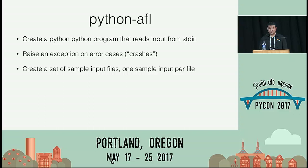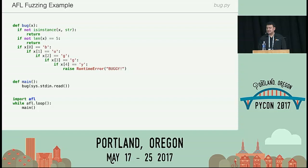The way fuzzers generally work is you have a script — a shim that takes input on stdin and executes your code. You also have a set of sample input files: valid programs if you're fuzzing a language, or valid file formats if you're fuzzing a file format parser — used as a starting point for mutation. For that same Python example, you just import AFL, use `while afl.loop()`, call your main function which reads from `sys.stdin`, and every time through the loop, `sys.stdin` will have new input.